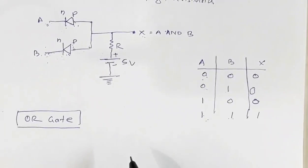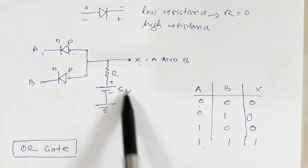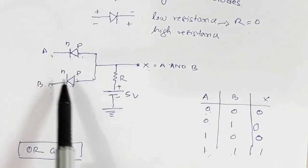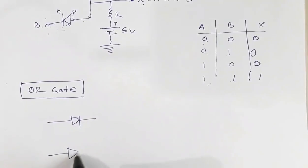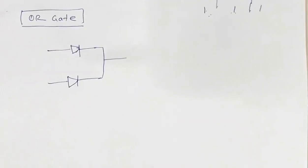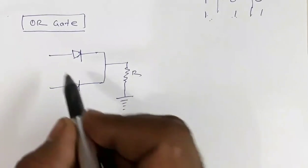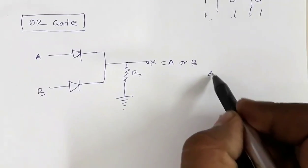For the OR gate construction using diodes, what we need to do is take the AND gate, flip the two diodes back to back, and remove the source of potential. So for the OR gate, the diodes in the AND gate are flipped and the source of potential is removed. We have resistor R connected, terminal A, terminal B, and output X equal to A OR B.